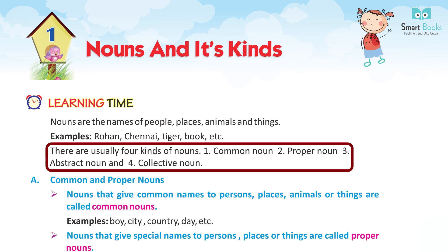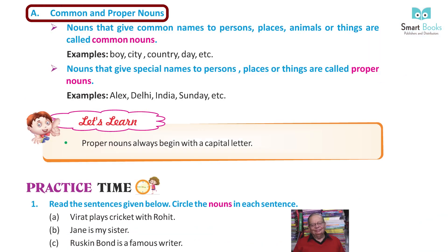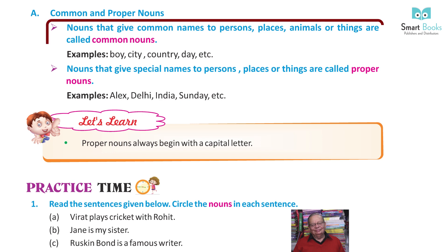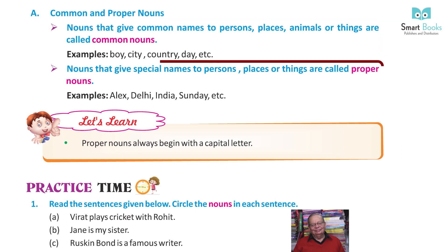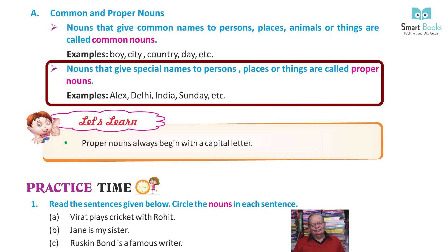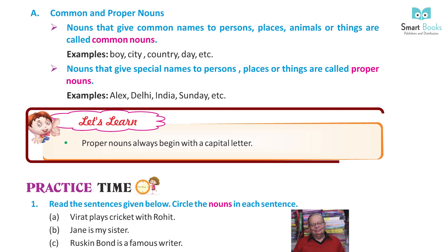and four, collective noun. Nouns that give common names to persons, places, animals or things are called common nouns. Examples: boy, city, country, day, etc. Nouns that give special names to persons, places or things are called proper nouns. Examples: Alex, Delhi, India, Sunday, etc. Note: proper nouns always begin with a capital letter.